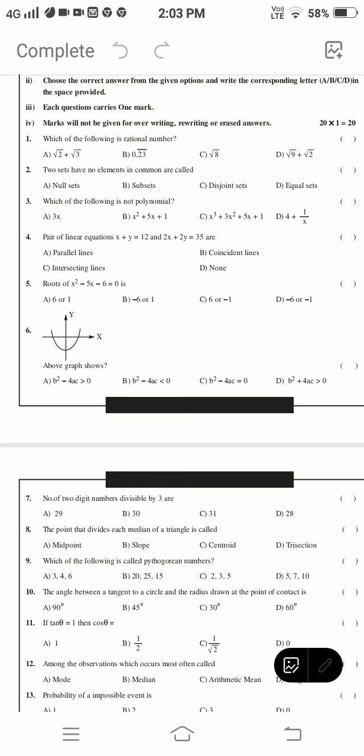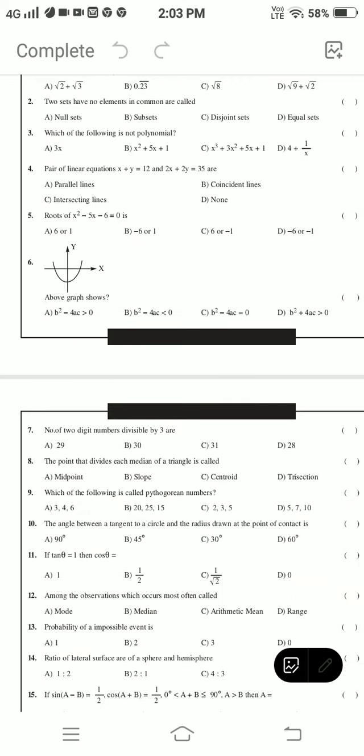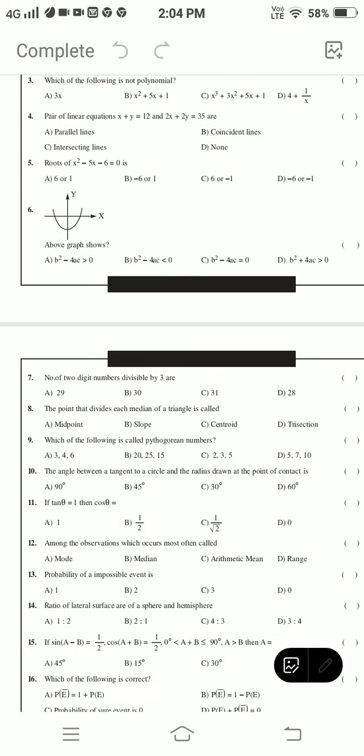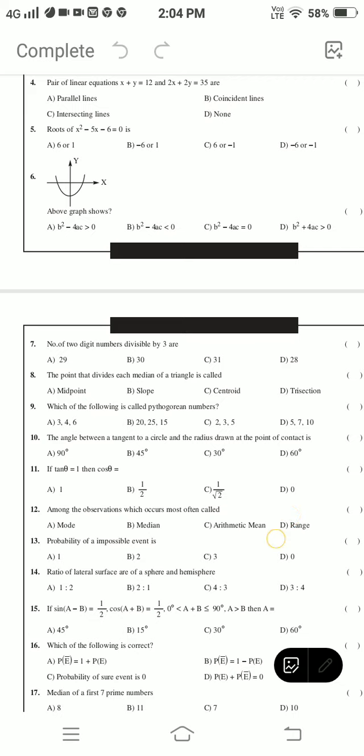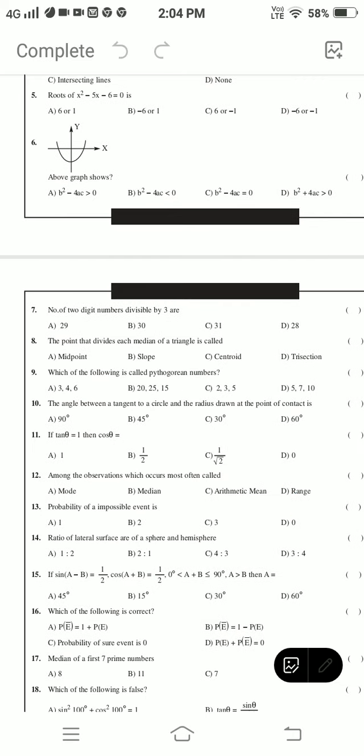The point that divides each median of a triangle is called? Which of the following are Pythagorean numbers? Angle between the tangent to a circle and the radius drawn at the point of contact? If tan θ = 1, then cos θ? Among the observations, which occurs most often is called? Probability of impossible event? Ratio of lateral surface of sphere and hemisphere?